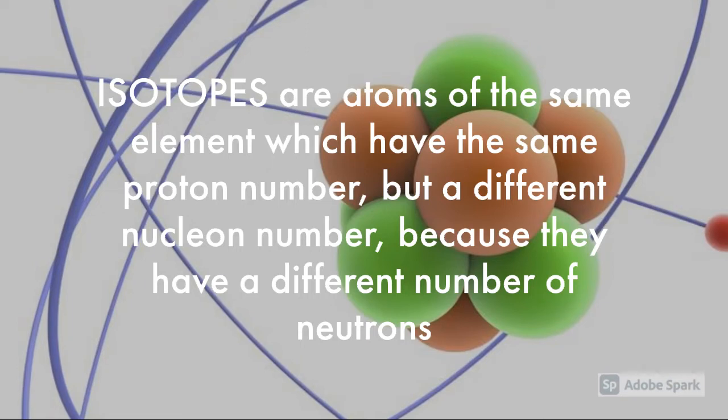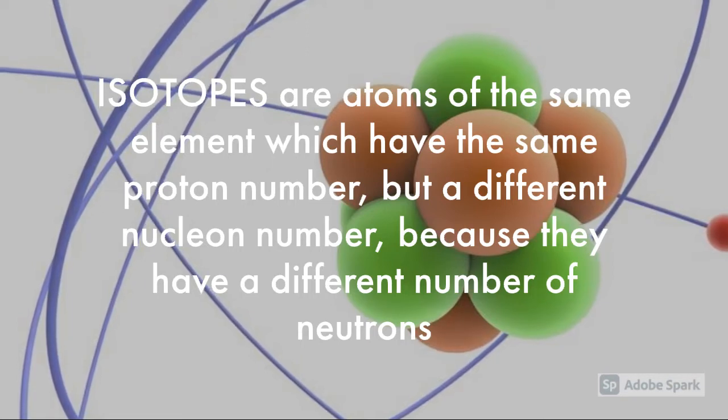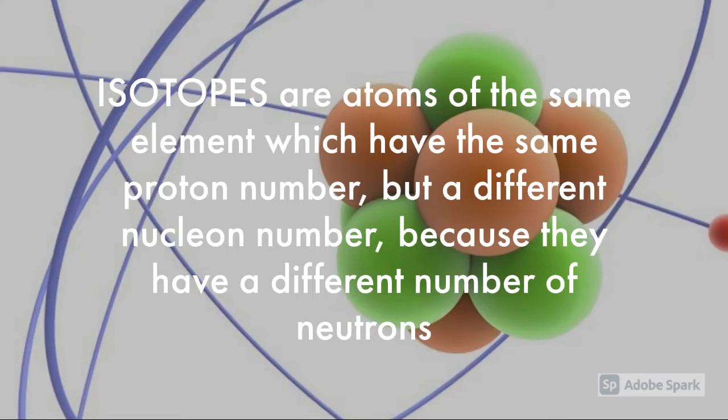Most elements have isotopes. For example, calcium has six, magnesium has three, iron has four, and chlorine has two. So it's nothing strange.